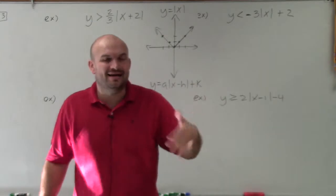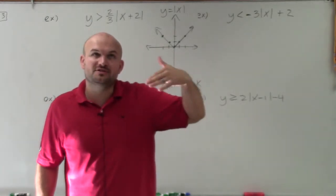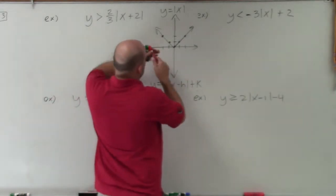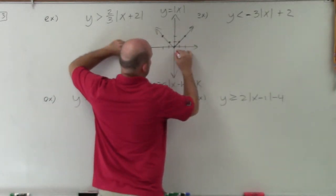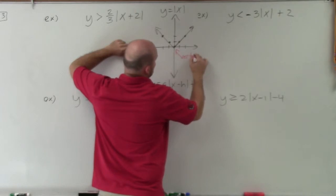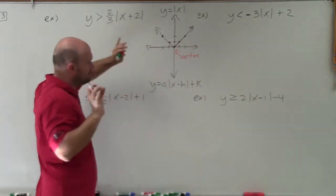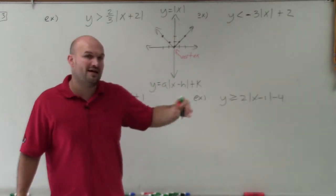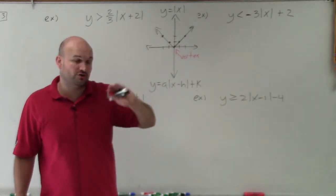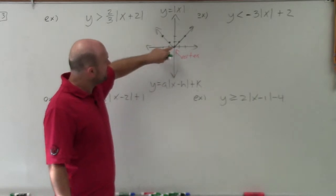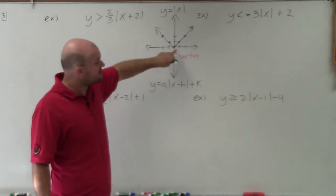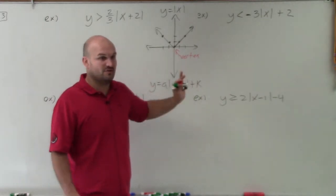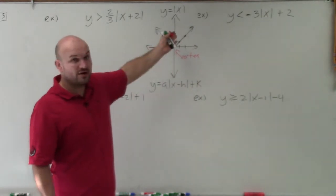The main important thing when graphing absolute value inequalities is to know the parent graph and what the vertex is. The transformations, which is our h and our k - h is the horizontal transformation, k is the vertical transformation. The parent graph starts with the vertex at 0, 0. So with transformations, you can move the vertex left to right and then graph the parent graph.